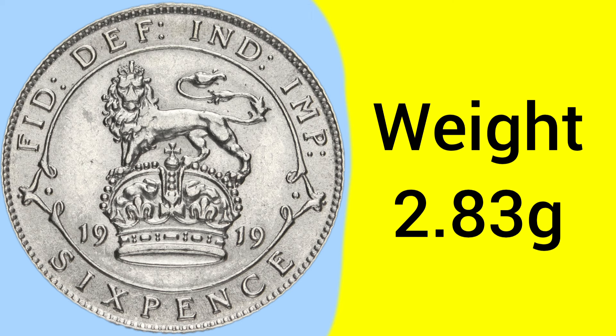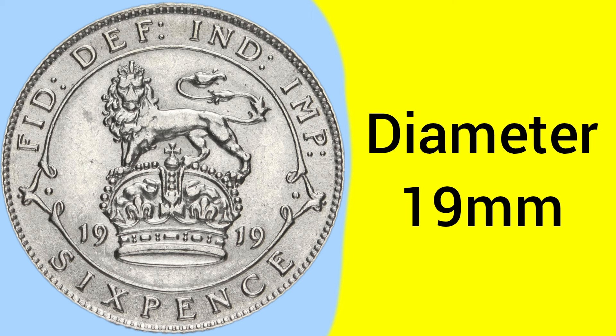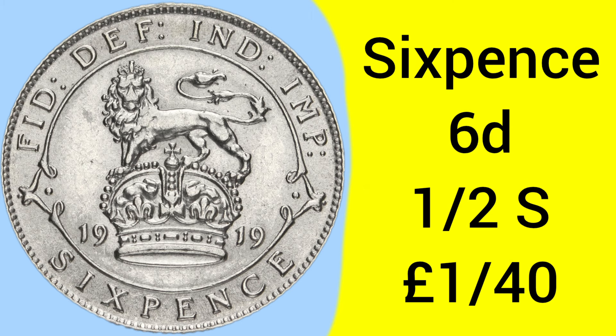The weight is 2.83 grams, as was set by George III in the Great Recoinage, and unchanged since. The diameter of a sixpence is 19 millimetres, so a fairly small coin. The mintage for this year is 13,375,447 — a very common coin, with well over 10 million produced that year.